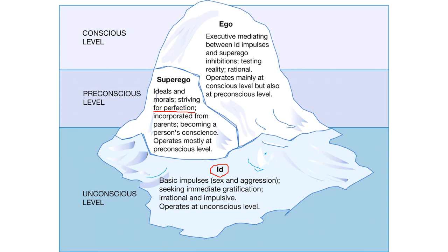The ego operates on both the preconscious and the conscious level. The ego makes contact with both the id and the superego — it is the mediator between them. The main job of the ego is to execute that mediation between both the superego and the id, operating mainly on the conscious level but sometimes on the preconscious level as well.